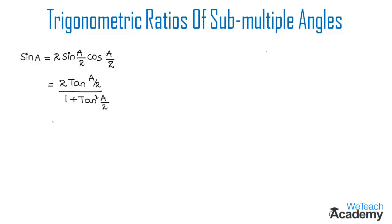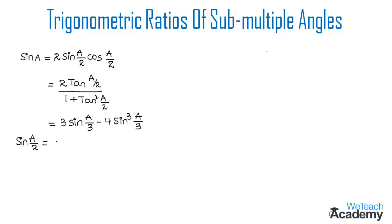Now let me discuss a formula for sine A whose multiples of A are fractions like 1/3. So here we get sine A which will be equal to 3 sine(A/3) minus 4 sine cubed(A/3). And now for the submultiple angle A/2, sine(A/2) will be equal to plus or minus under root of (1 minus cos A) divided by 2.